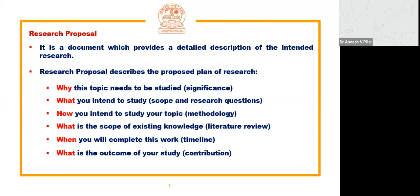Even without all these components you can submit a research proposal, but when you submit to a funding agency, they are very keen to know all these components and will not accept your proposal without them. Some funding agencies specify exactly what components to include — significance of the study, research questions, methodology, literature review, etc. — and give a heading structure. If your funding agency or institution does not provide a structure, you have to necessarily include all these aspects yourself.